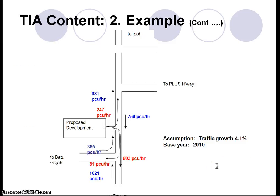We assign the traffic to the road system and convert vehicle numbers into PCU — passenger car units. For example, a bus equals 2.75 PCU and a motorcycle equals 0.35 PCU. The total traffic going to Ipoh is 247 PCU per hour, to Gopeng about 600 PCU per hour, and to Batu Gajah about 60 PCU per hour. The existing traffic is shown separately, with an assumed traffic growth rate of 4.1% based on Public Works Department statistics.